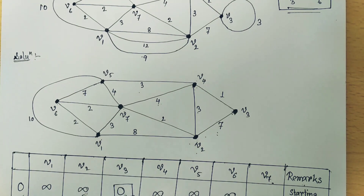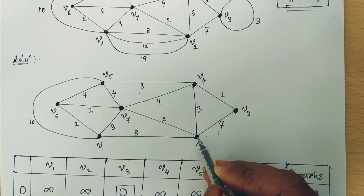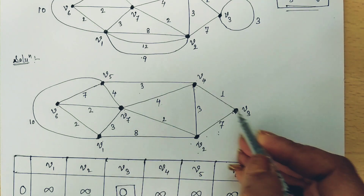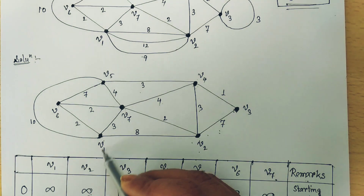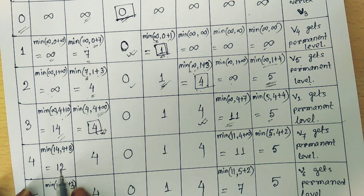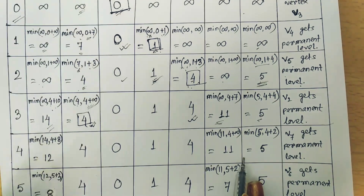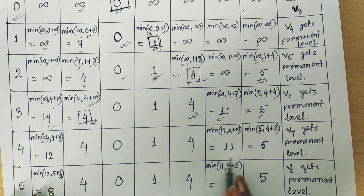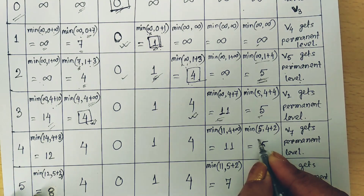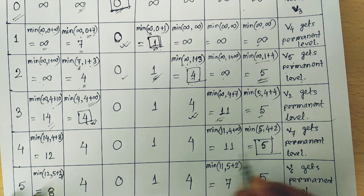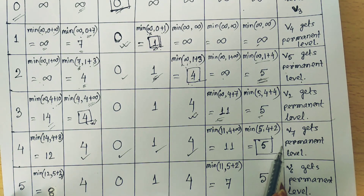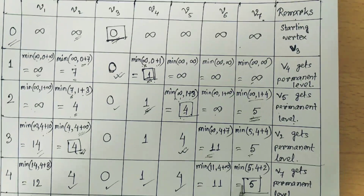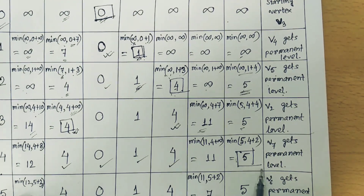We move to V2. V2 is connected with V1, V7, V3, and V4. But V3 and V4 already have permanent labels, so we consider only V1 and V7. After updating labeling values accordingly, we find that the minimum labeling value is 5, corresponding to vertex V7. So V7 gets its permanent label.